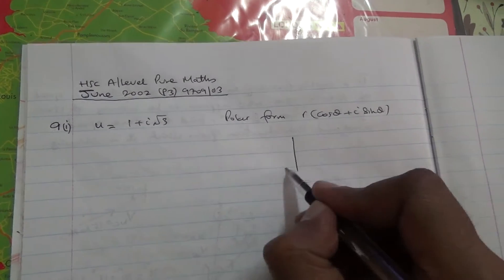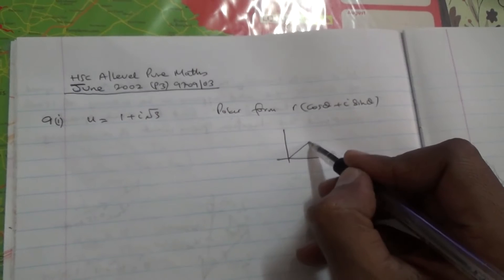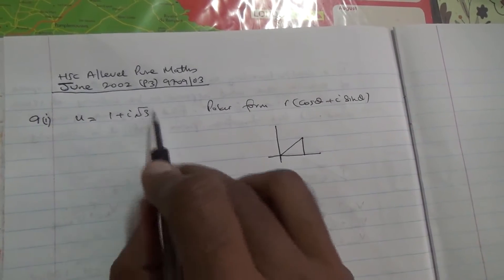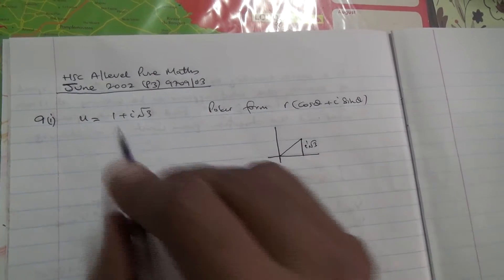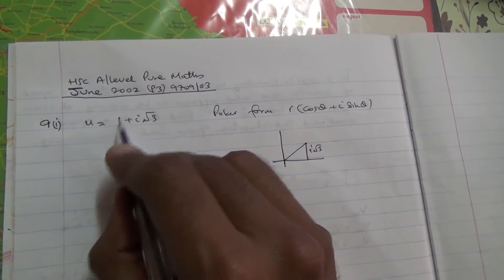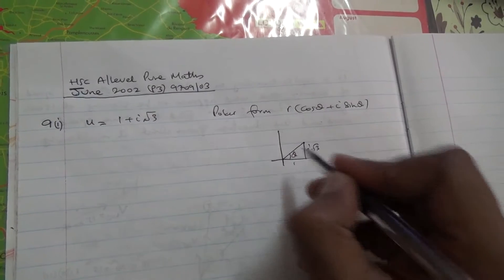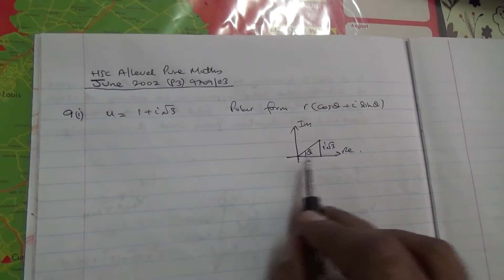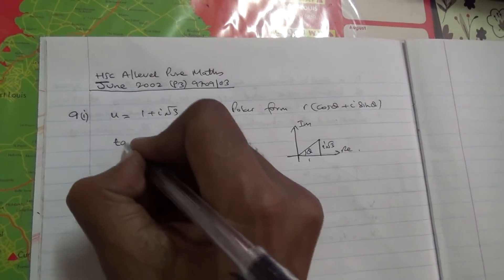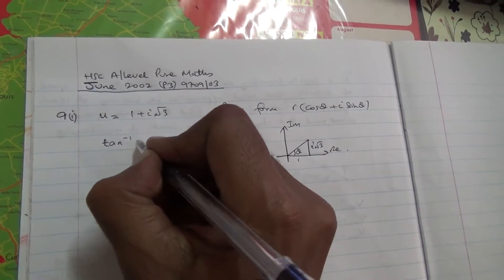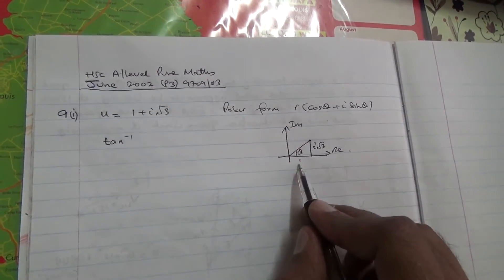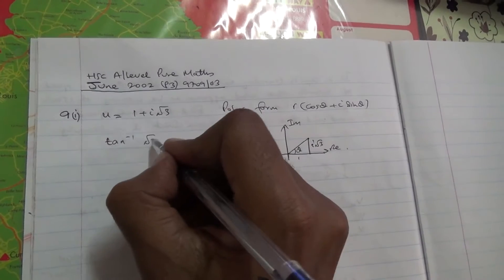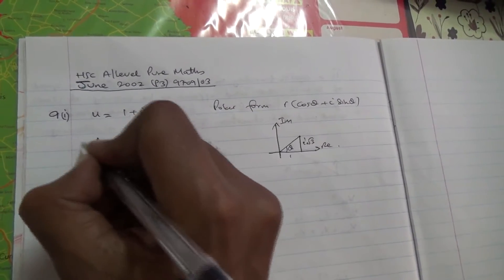This is basically a right angle triangle. The opposite side is i root 3 and the adjacent side is 1. The imaginary part is on the imaginary axis and that is the real axis. So we can find θ: θ equals tan inverse of opposite over adjacent, which is root 3 over 1.